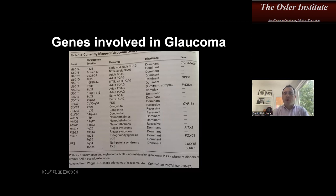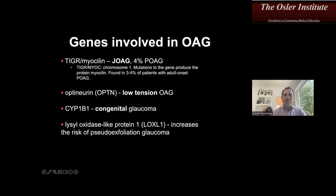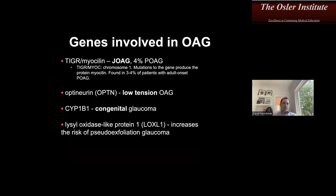Now for the high-yield genes that sometimes appear on the boards — I'm fairly certain at least one will pop up. The highest yield are: MYOC (myocilin), found in juvenile open-angle glaucoma and four percent of primary open-angle glaucomas, on chromosome 1, affecting the protein myocilin. Then there's optineurin, seen in low-tension open-angle glaucoma. CYP1B1 (cytochrome P450) for congenital glaucoma. And LOXL1 (lysyl oxidase-like protein), which increases the risk of pseudoexfoliation glaucoma.